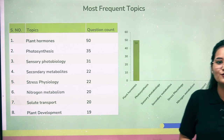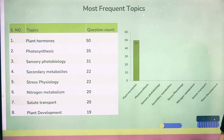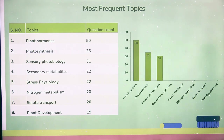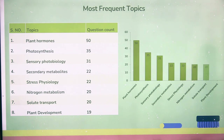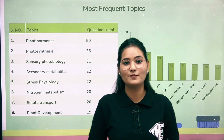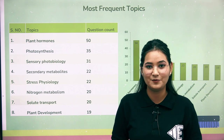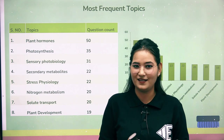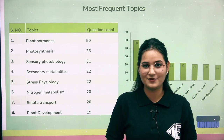After plant hormones, the remaining high-frequency topics are: photosynthesis with 35 questions; sensory photobiology with 31 questions; secondary metabolites with 22 questions; stress physiology with 22 questions; nitrogen metabolism with 20 questions; solute transport with 20 questions; and plant development with 19 questions. These 8 high-frequency topics are very manageable and you can easily prepare them.